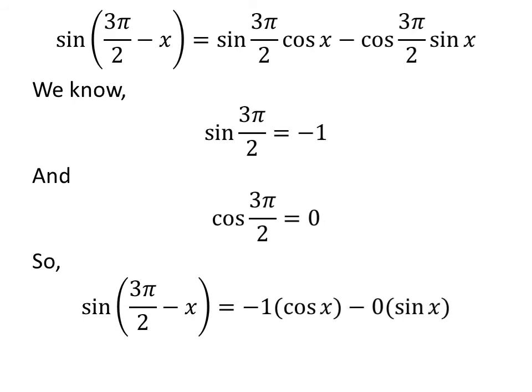Let us replace the value of sine of 3 times pi upon 2 and cosine of 3 times pi upon 2 in the above expression of sine of 3 times pi upon 2 minus x. So, we got sine of 3 times pi upon 2 minus x is equal to minus 1 times cosine of x minus sine of x times 0.